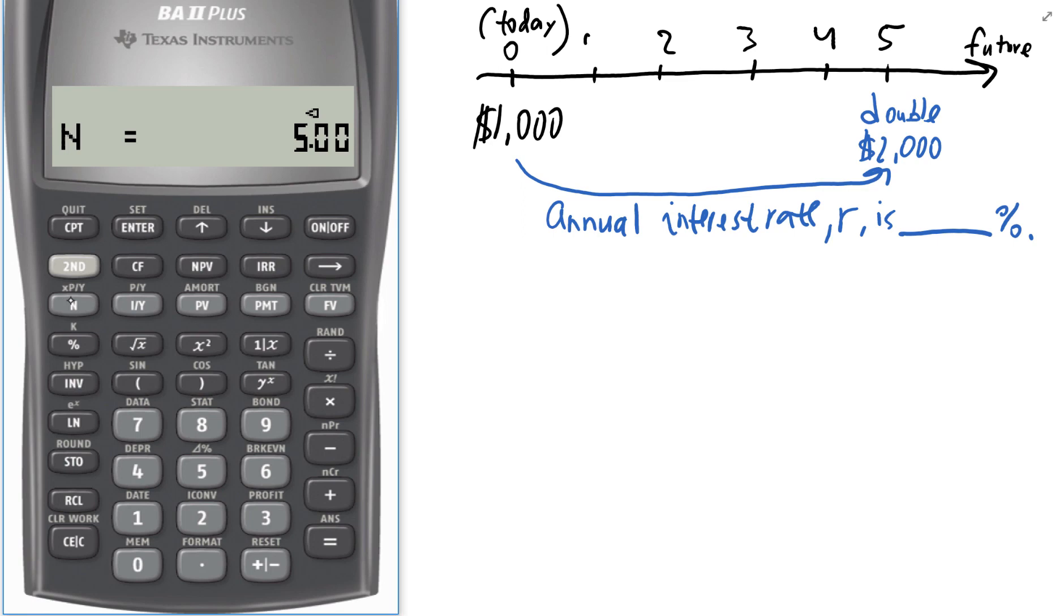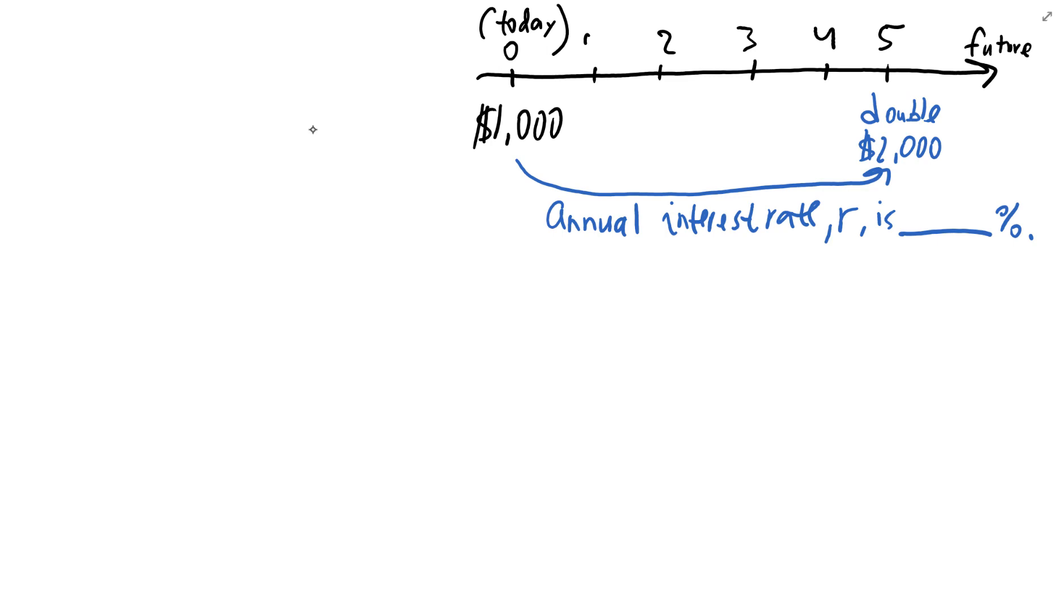And what I want to do is compute the interest rate. 14.87% per year. So this is what I'm going to put here. 14.87%. This is my answer.